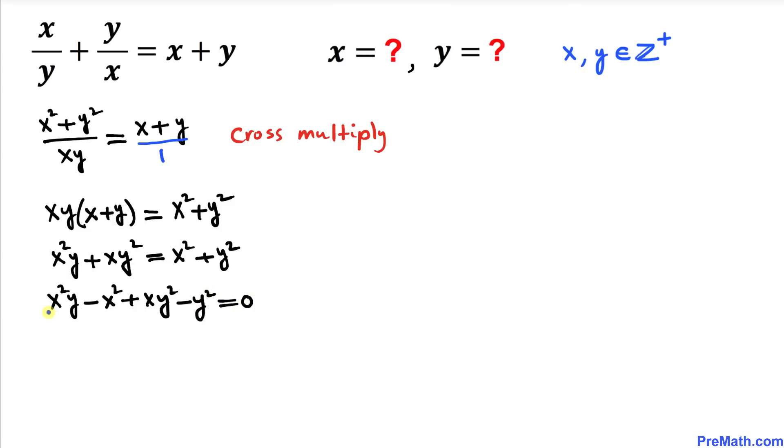And now we can see between these first two terms, x squared is in common. Likewise, in the next two terms, y squared is in common. So therefore, we can factor out x squared. This is going to give us x squared (y minus 1) plus...